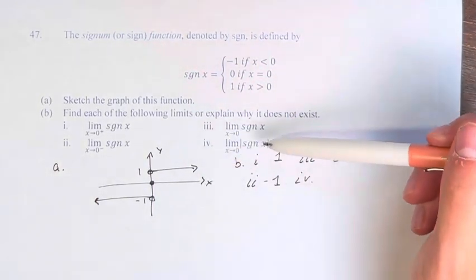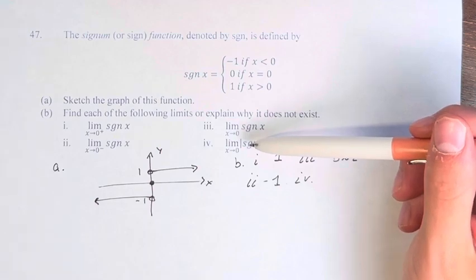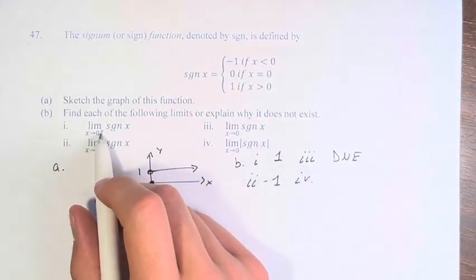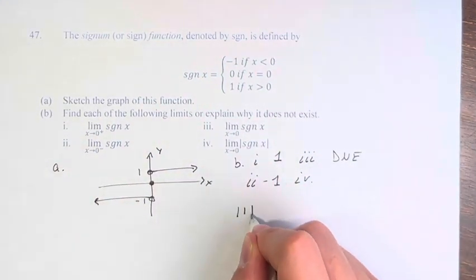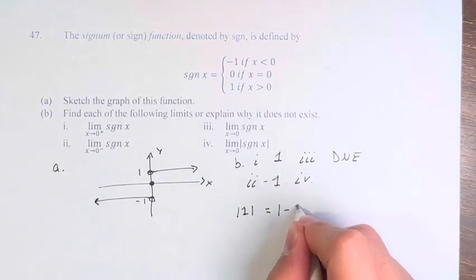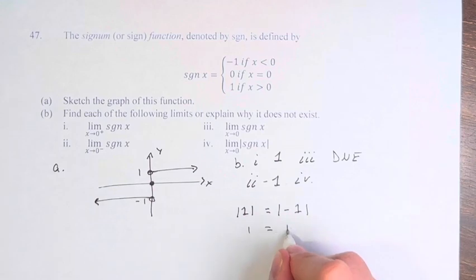However, the limit of the absolute value of this function does exist because the limit as x approaches 0 from the right, the absolute value of 1, equals the absolute value of the limit from the left, negative 1, because 1 equals 1. They have the same absolute value, therefore the limit of the absolute value is equal to 1.